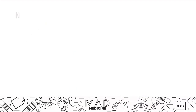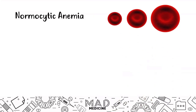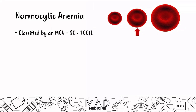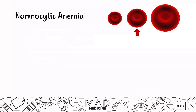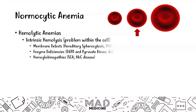Let's begin our discussion by talking about normocytic anemia. Normocytic anemias are based on the size of the red blood cell — a normal RBC size with an MCV of 80 to 100. They can be subdivided based on hemolytic and non-hemolytic anemias, and hemolytic anemias can be further subdivided into intrinsic and extrinsic causes. Intrinsic causes include membrane defects, enzyme deficiencies, and hemoglobinopathies, which we are discussing today.